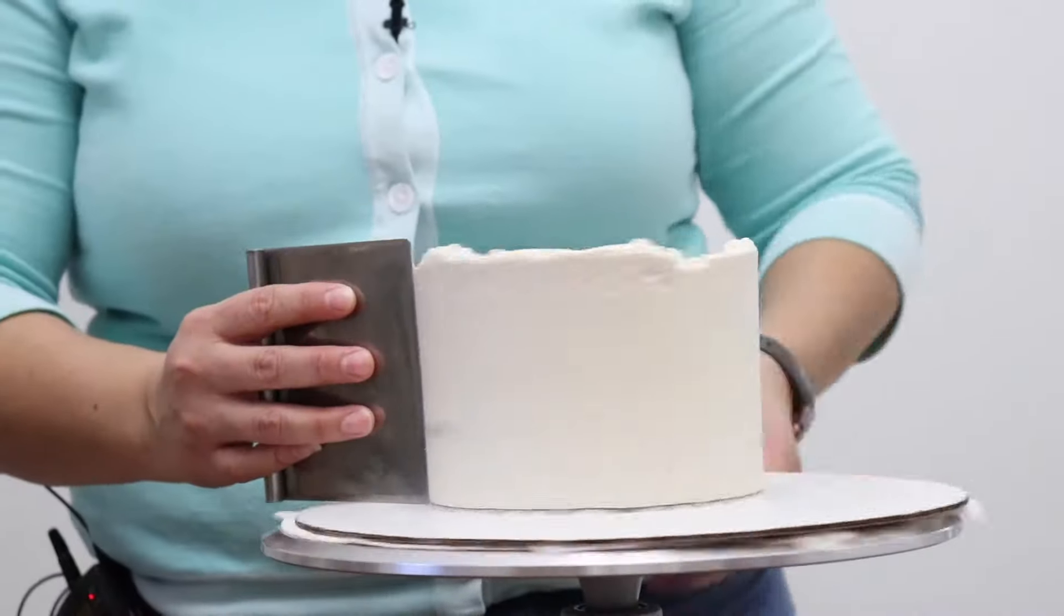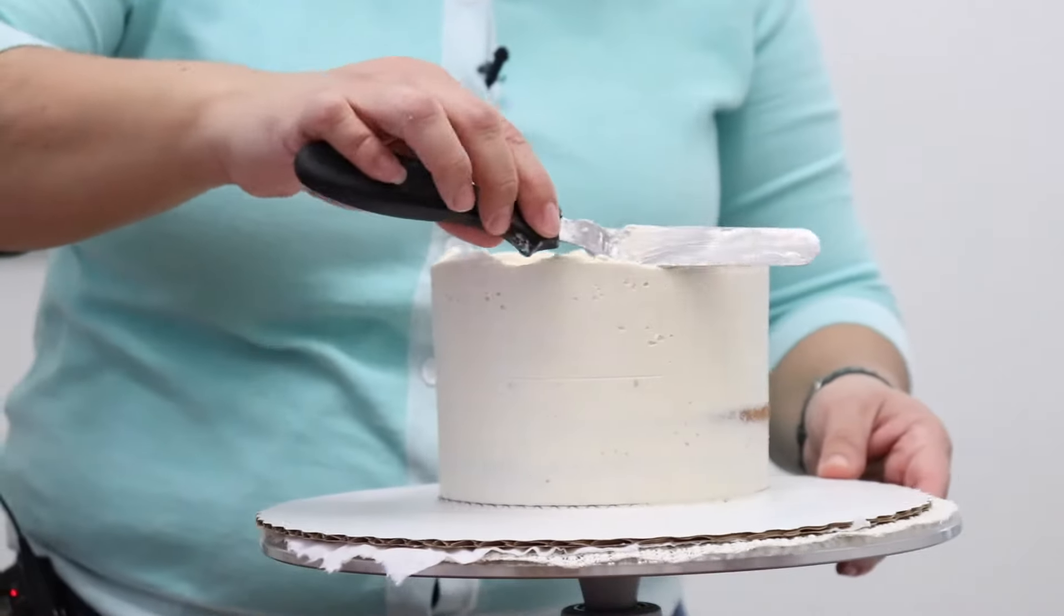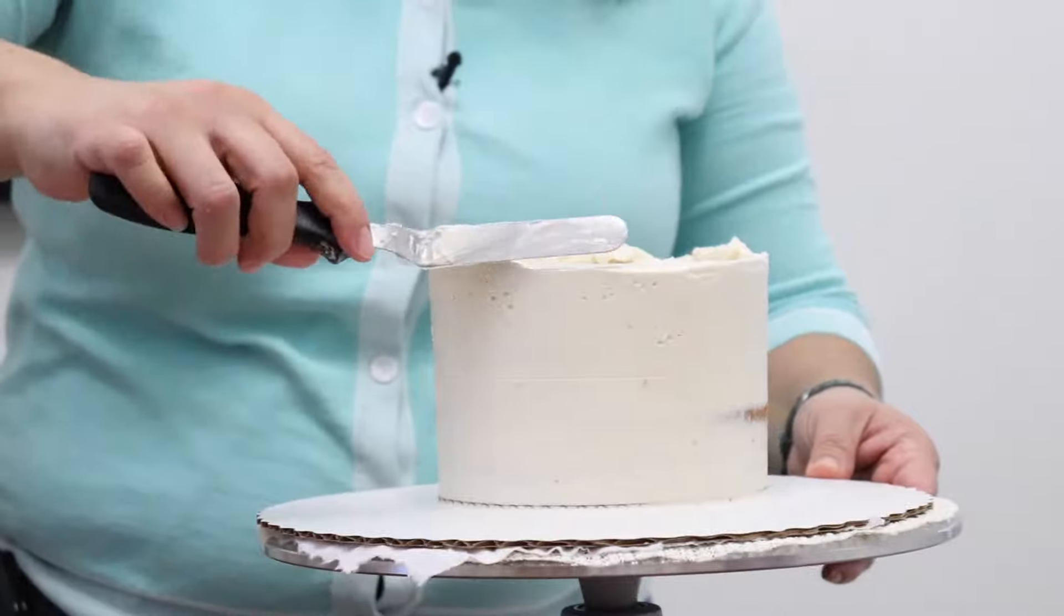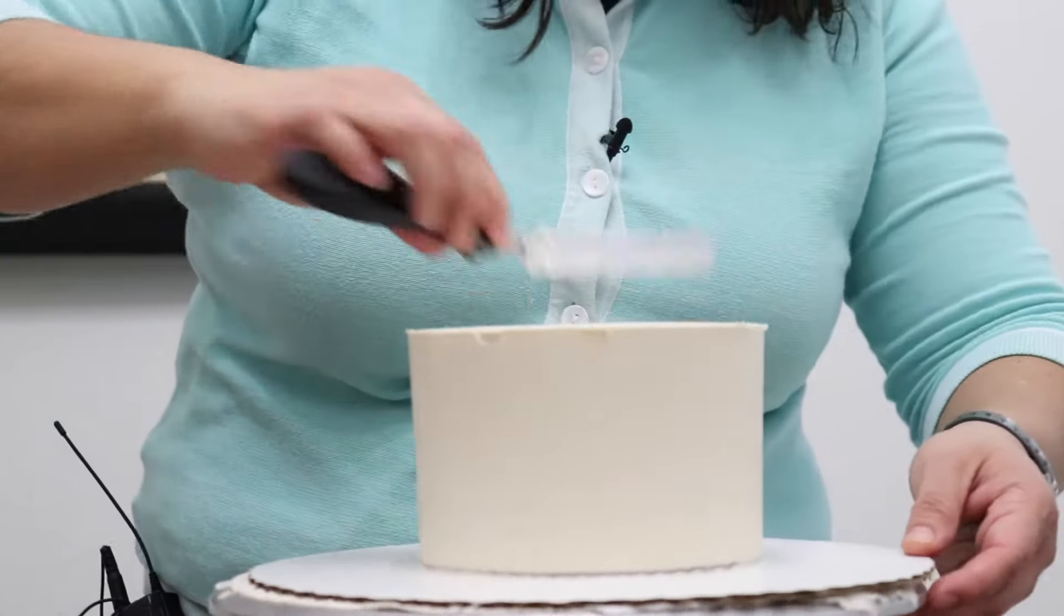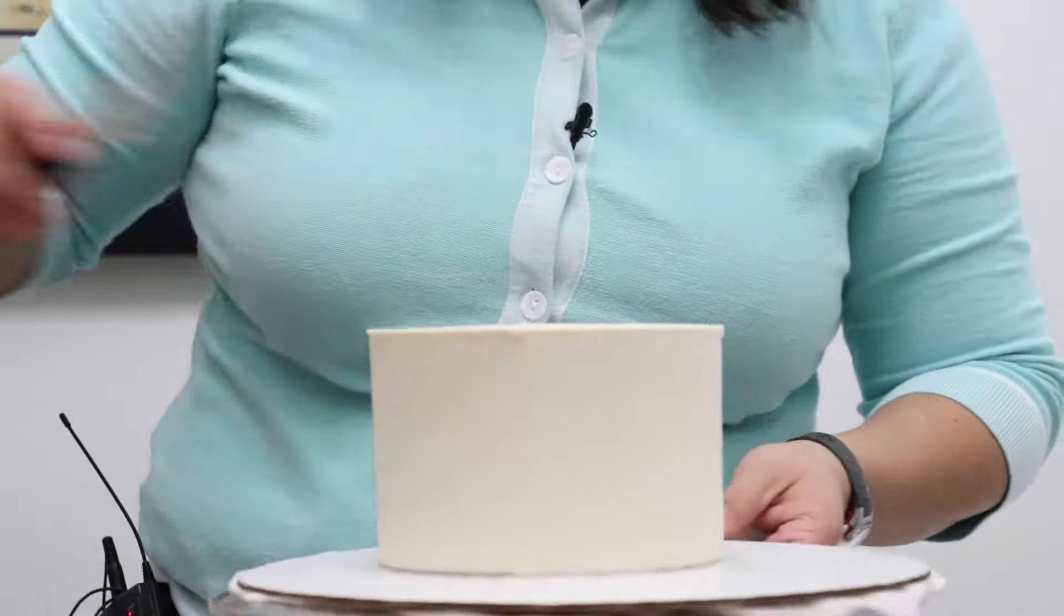For this tutorial I'm using a vanilla cake made from scratch. I'm going to apply the buttercream and make sure that it has sharp edges. If you need a recipe for the cake, check out the links in the description box below.